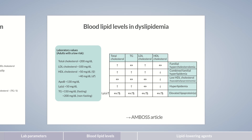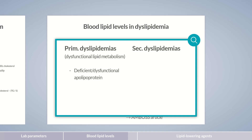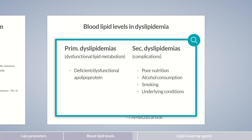Additional information can be found in our AMBOSS article. Apart from the classification based on the blood lipid profile constellation, dyslipidemias can also be categorized according to the underlying cause. They can be differentiated into primary — that is, genetic — and secondary dyslipidemias. Primary dyslipidemias are often due to dysfunctional lipid metabolism, for example due to a deficient or defective apolipoprotein. In contrast, secondary dyslipidemias are complications. They can be triggered by poor nutrition, alcohol consumption, smoking, or underlying conditions such as type 2 diabetes mellitus, but also by drugs such as contraceptives, immunosuppressants, or thiazide diuretics. Pregnancy can also lead to secondary dyslipidemia, but it usually resolves after birth.